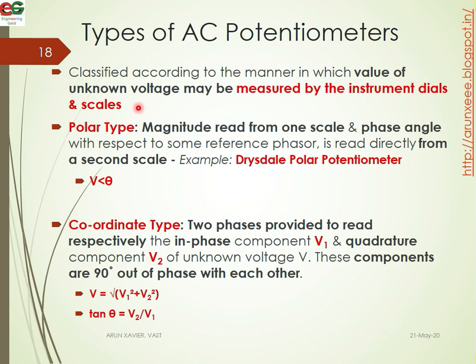In polar type potentiometers, the magnitude is read from one scale and the phase angle with respect to the phasor is read from a second scale. That is the magnitude and phase value. An example of polar type potentiometers is the Drysdale potentiometer.